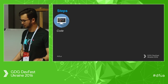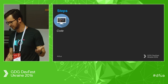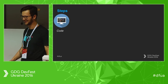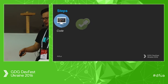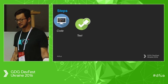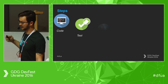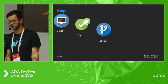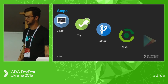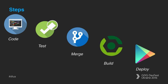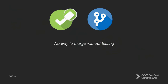The steps of building are: first, you write code — I'm not going to talk about that, I hope you have experience. Next, you test your code, then you merge it, then you build it, and then you deploy your solution. Let's start with the first steps: testing and merging.